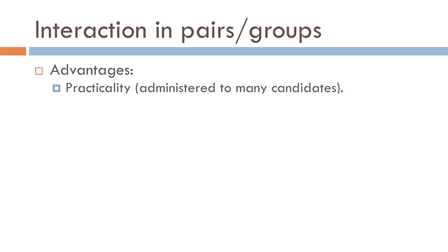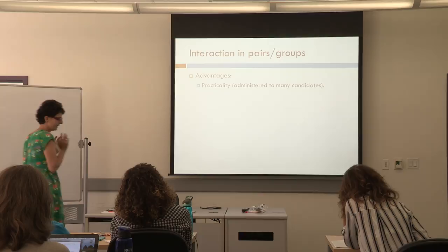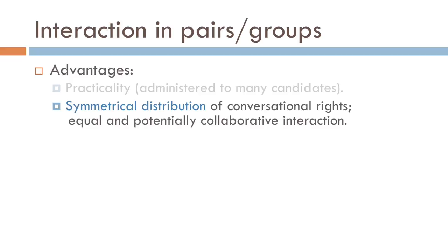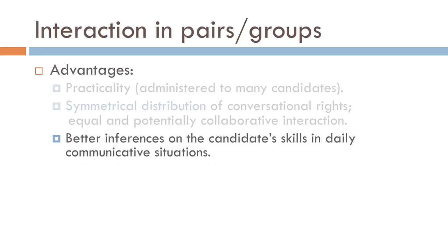If we look at interactions in pairs or groups, one advantage is practical — two, three, or four students together at the same time rather than one by one. Then conversational rights are more symmetrically distributed, and you should have a better chance at a collaborative and more equal type of interaction. In a way, you can make better inferences about what the students' skills in daily communicative situations might be.